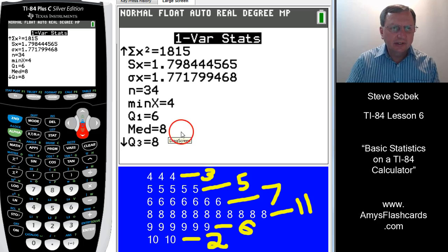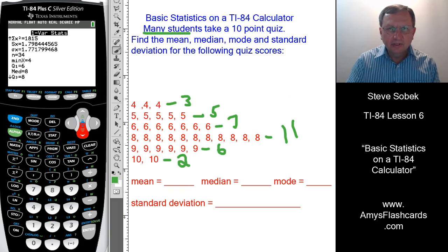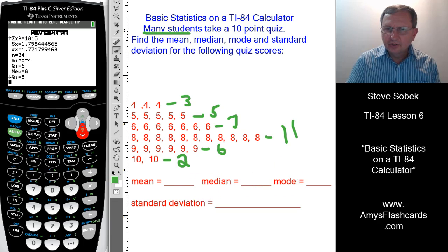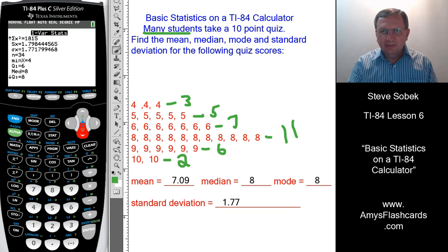So let's go back to the home screen and type those values in. 7.09 for the mean, median is 8, mode is 8, standard deviation 1.77. Well, that's it for example 2.